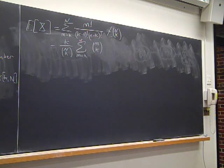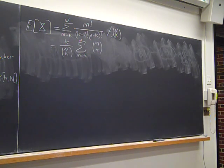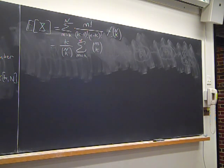This is looking a lot like the German tank problem. If I wanted to just calculate the probability, I would just sum m minus 1 choose k minus 1 over n choose k, where m goes from k to n.